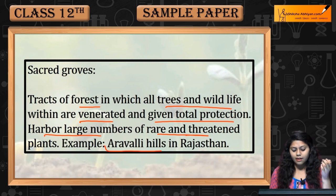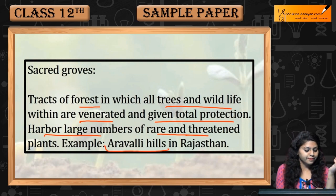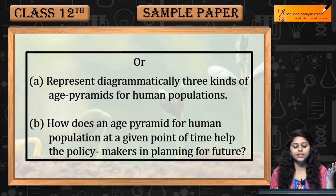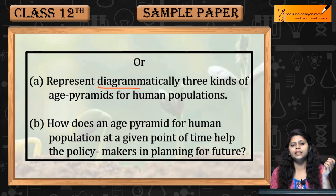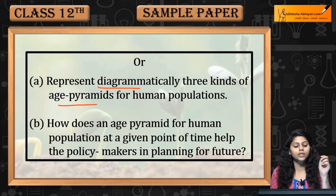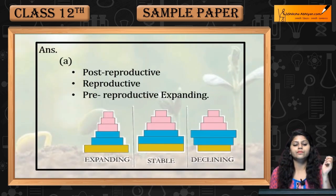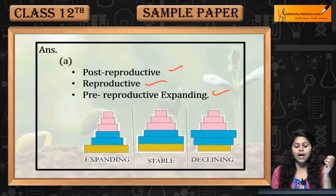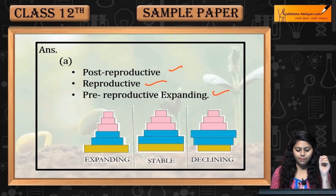Sacred groves harbour a large number of rare and threatened plants. An example is Aravalli Hills in Rajasthan. The next question asks us to represent diagrammatically three kinds of age pyramids for human population: post-reproductive, reproductive, and pre-reproductive — expanding.